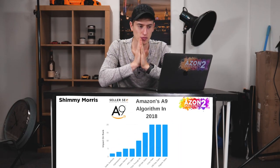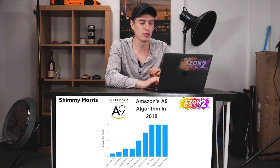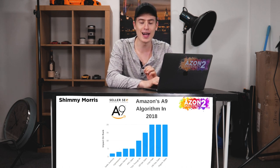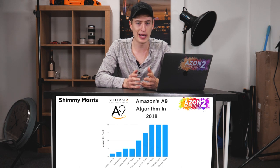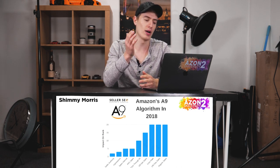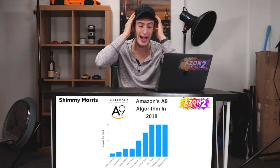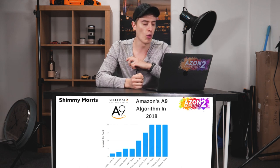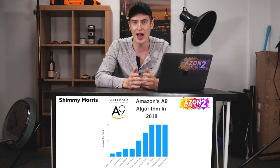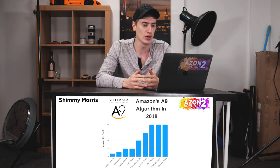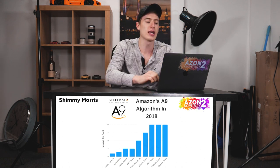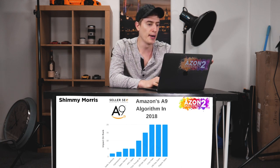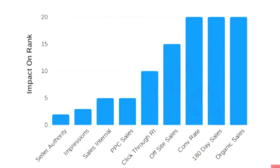So Amazon's algorithm — what they call the A9 algorithm — is how your product is ranked on Amazon. No one really knows exactly how it works, but Seller SEO created a blog post outlining what they think are direct factors. Looking at the chart on screen, you can see the impact on rank from: seller authority, impressions, sales internal, PPC sales, click-through rate, off-site sales, conversion rate, 180-day sales, and organic sales.